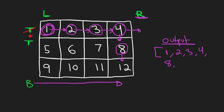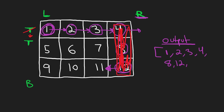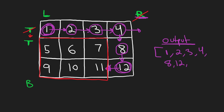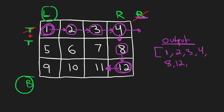We keep going down until we reach our bottom boundary. We reach the bottom boundary and the last value is 12. So now obviously we're going to start going left. We just did this entire right column — that tells us we can update our right boundary, moving it inward. The left and bottom boundaries can still be the same because we still need them. Now we are going to go left. We reach 11, add it, go left again, keep going until we reach our left boundary.